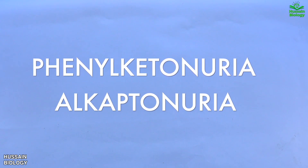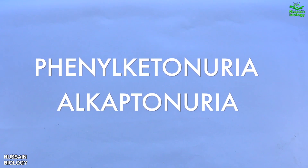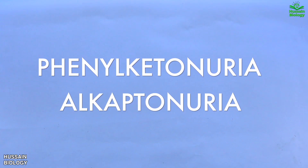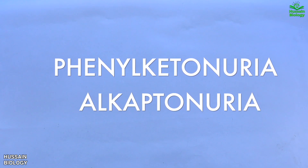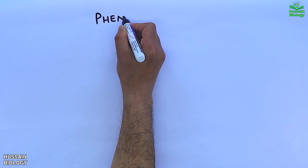In this video we are going to explore two important metabolic disorders: phenylketonuria and alkaptonuria. Both are rare inherited conditions that result from defects in the metabolism of amino acids. Let's begin with the first one, phenylketonuria.